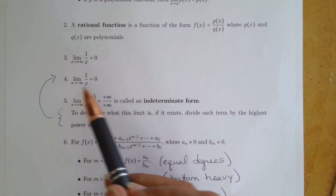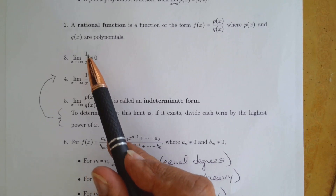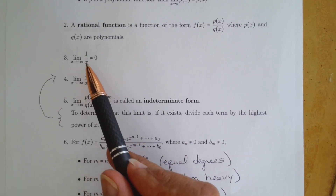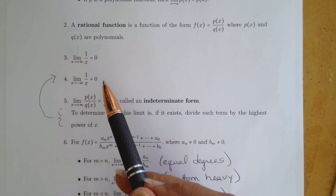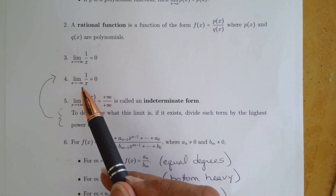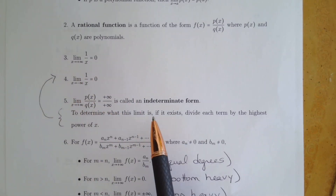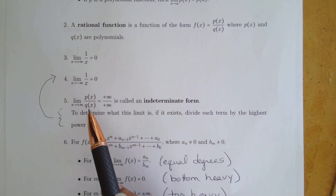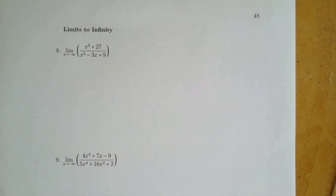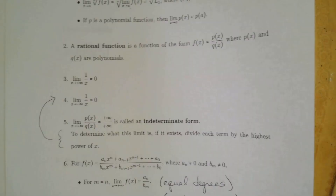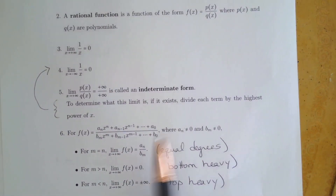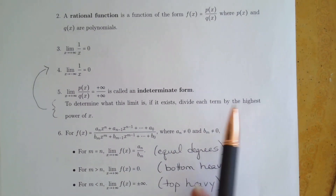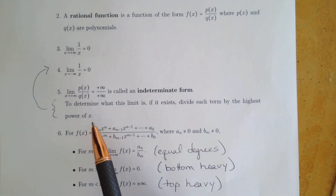Remember that if we can get a problem down to 1 over any power of x — could be x, x squared, whatever — we know that the limit, if x is going to positive or negative infinity, is 0. So what we're trying to do in this indeterminate form, when you have a polynomial over polynomial, which is what we're looking at in numbers 8, 9, and 10, is divide each term by the highest power of x.